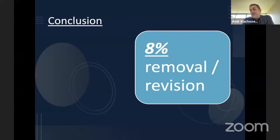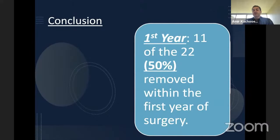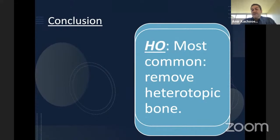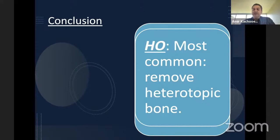The findings showed only 8% removal or revision, meaning 90 to 92% of patients did not come back to remove the head. It is not a weight-bearing joint, so we don't expect it to wear off over time. The highest rate of removal was during the first year — 11 out of 22 removals. The most frequent reason to remove the head was to excise heterotopic ossification and address elbow stiffness, rather than complications because of the replacement itself.